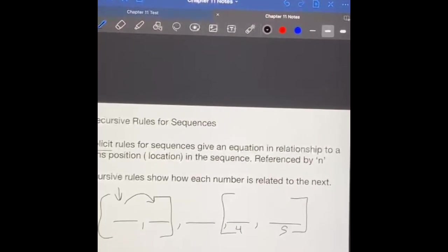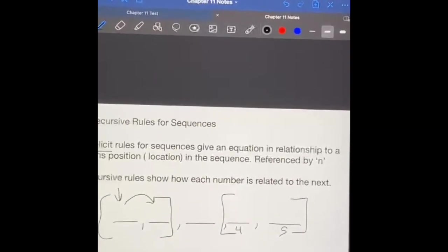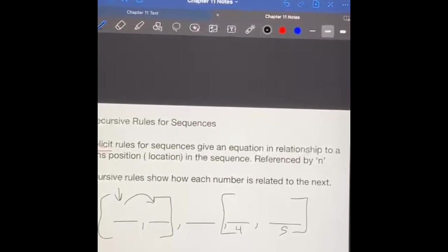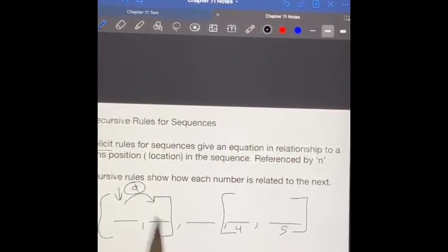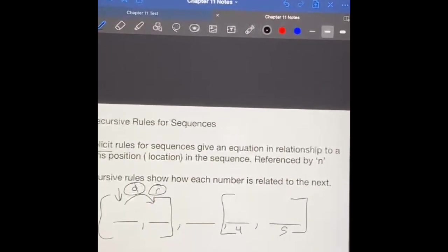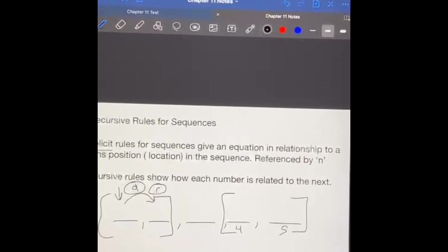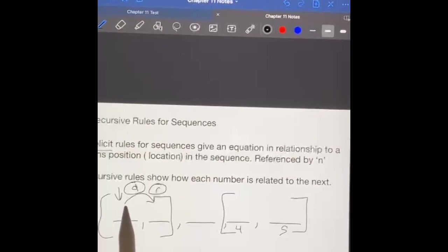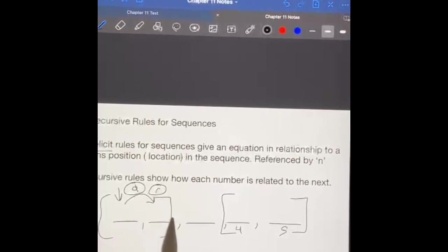Sometimes they are consistent across the board, but what recursive rules allow us to do is have more complicated sequences where it's not simply adding a single common difference or multiplying by a single common ratio. It might be taking where you were at and then doing something specific, or it might be taking two terms and adding those together to get a third term.